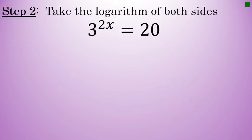With the exponential part of the equation isolated, the second step is to take the logarithm of both sides. I'll take the log of 3 to the 2x power and the log of 20. We should not actually evaluate any of the logarithms yet. That won't happen until the fourth and final step.